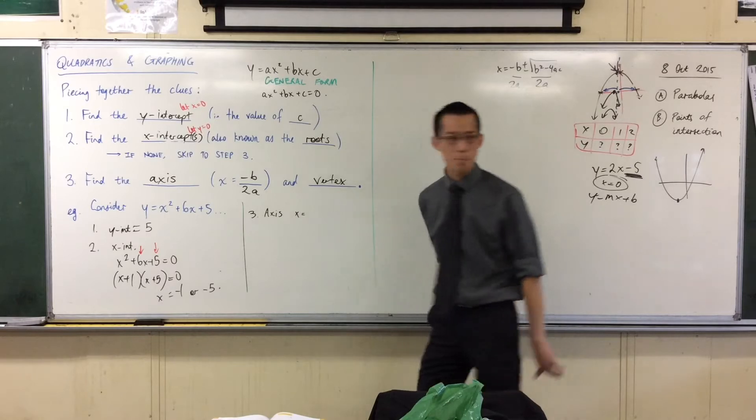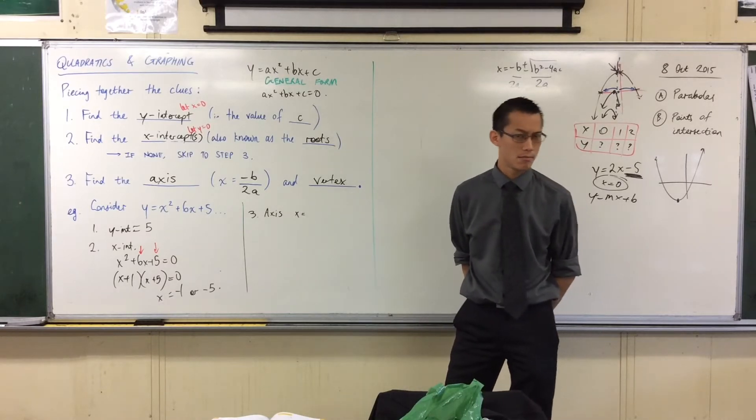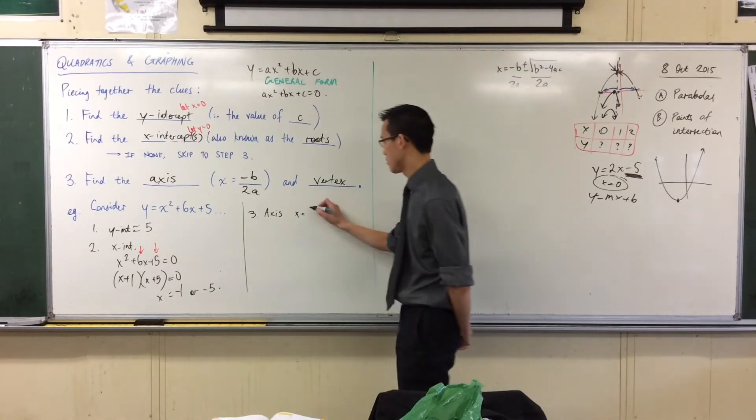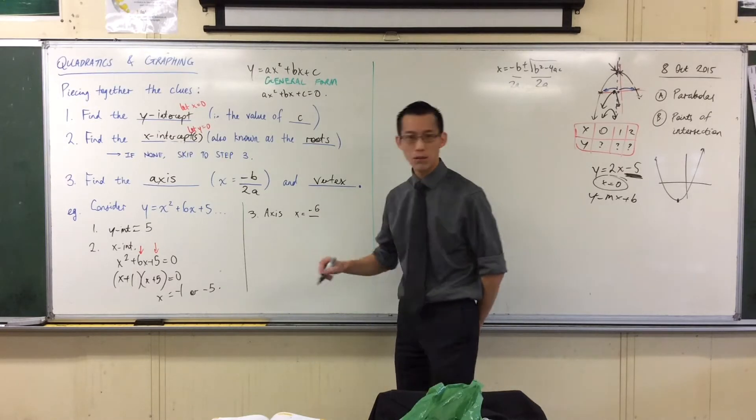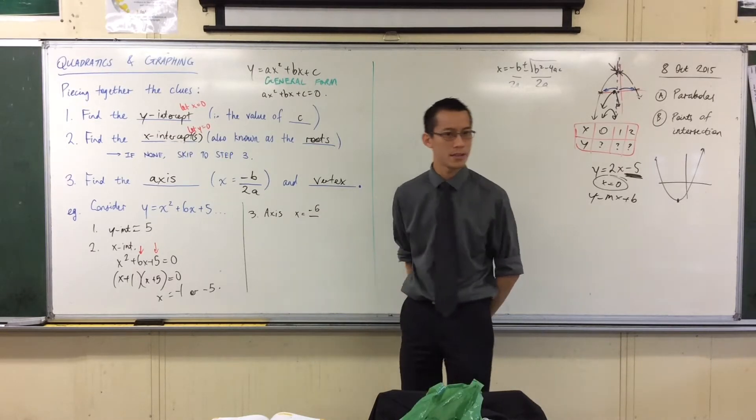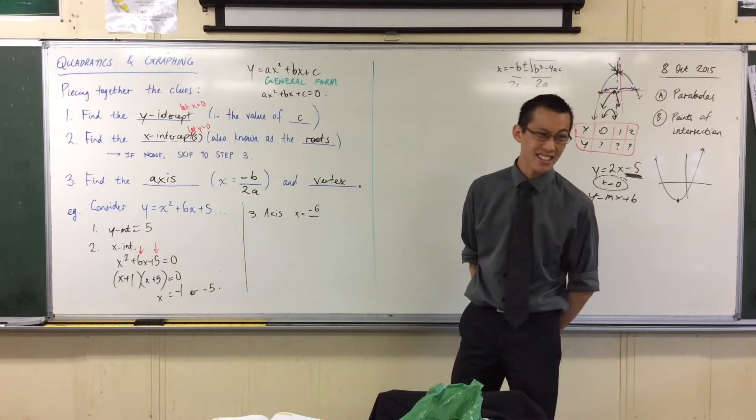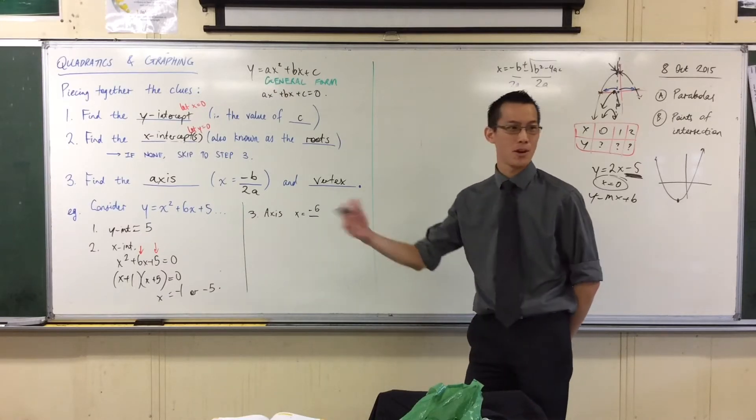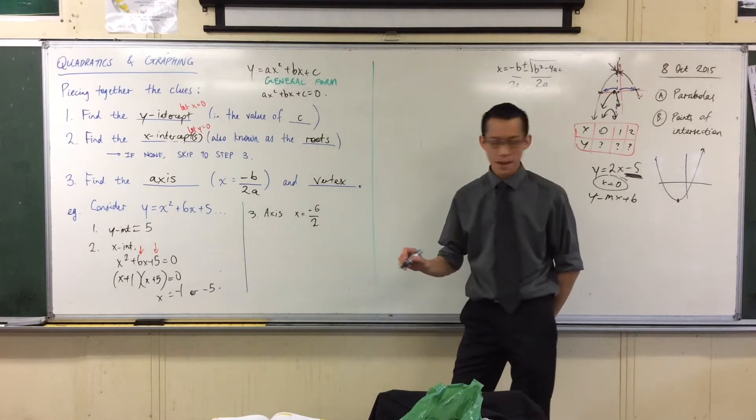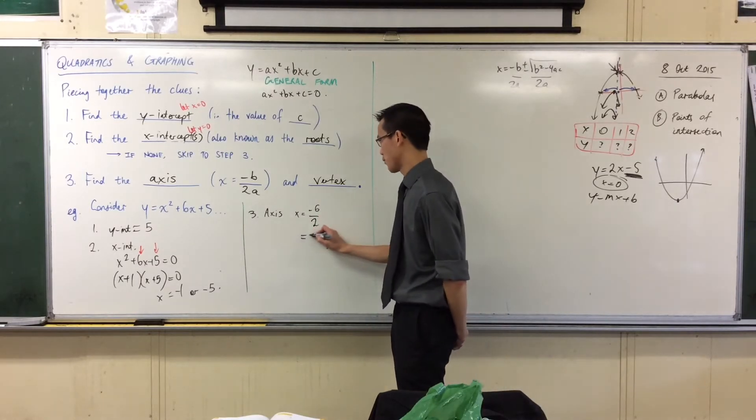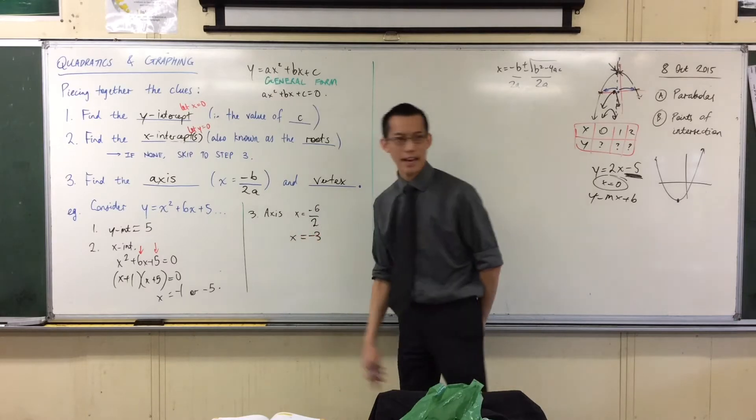x equals, what's b in this case? Six. Negative six. And then on the denominator, I have two a. What's a in this case? One. It's one. It's hiding. I haven't written it there, but that's because multiplying by one doesn't change anything. So two times one is just two. Now, this is a really simple fraction. I'll just simplify that. It's negative three.